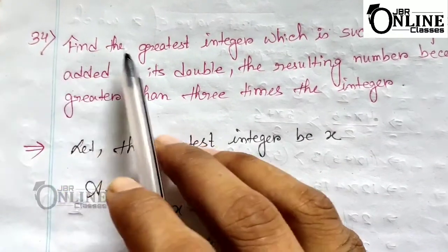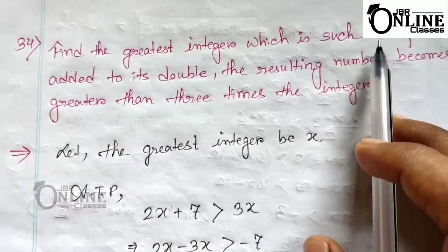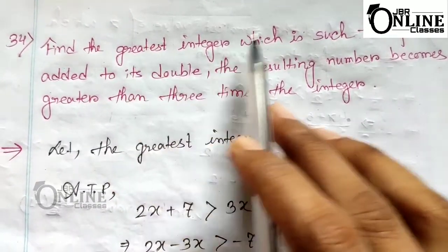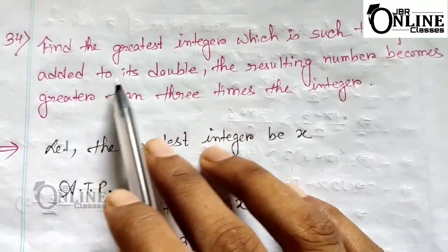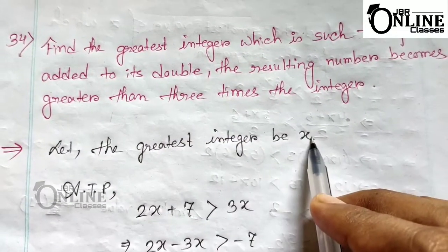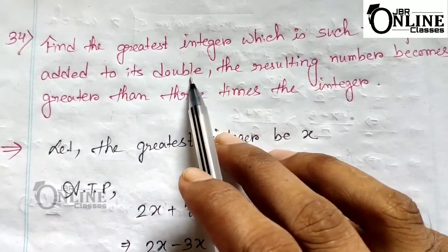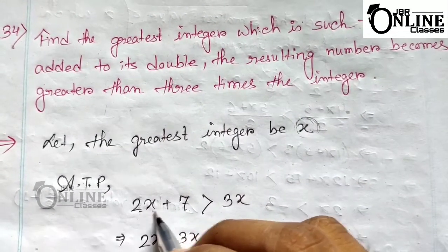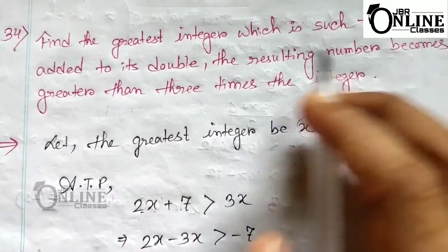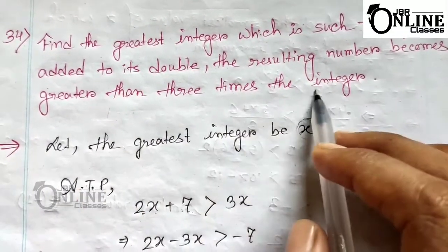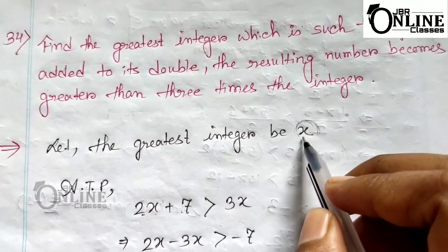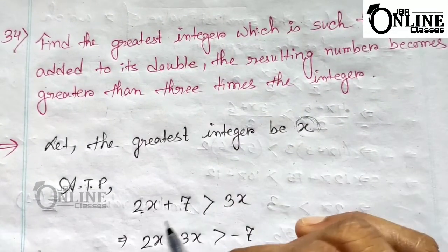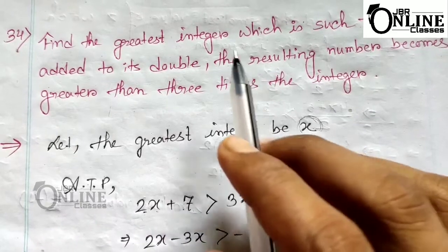Sum number 34, the last problem in this exercise: find the greatest integer such that if 7 is added to its double, the resulting number becomes greater than 3 times the integer. Let the greatest integer be x. The double of the number is 2x, and adding 7 gives 2x + 7. This must be greater than 3 times the integer, i.e., 3x. Read the question carefully and construct the inequation accordingly.